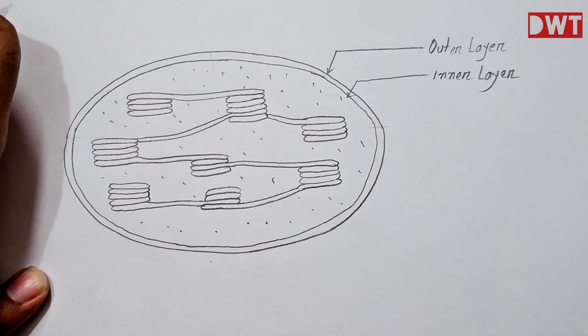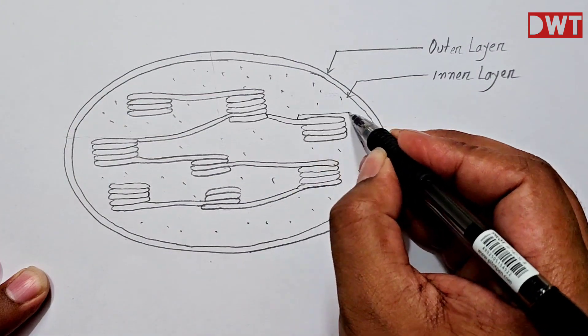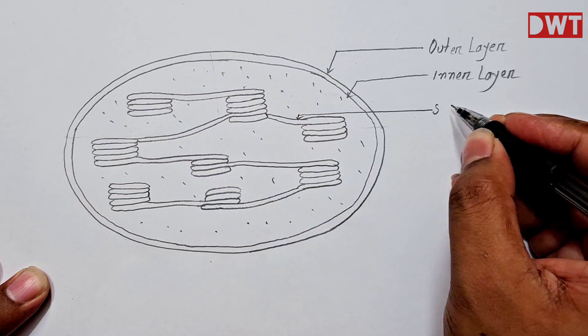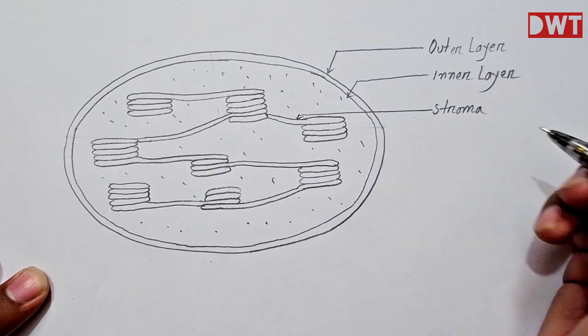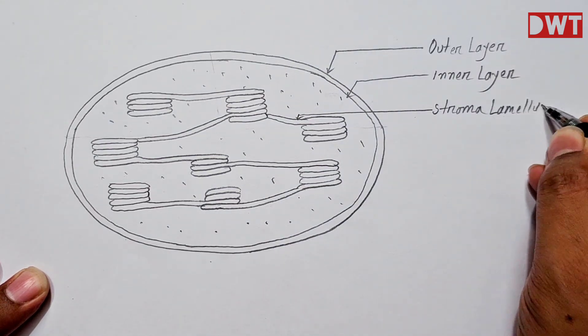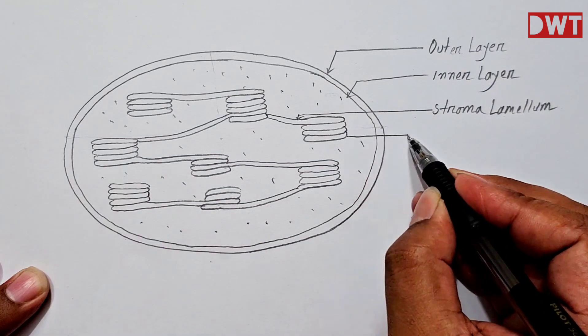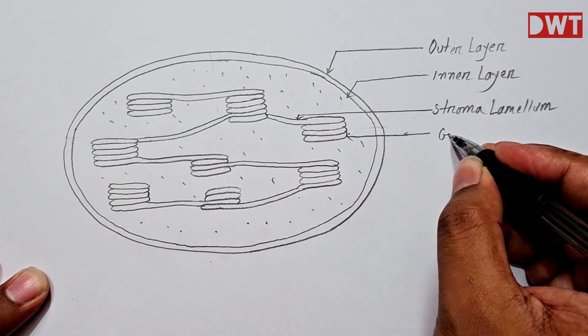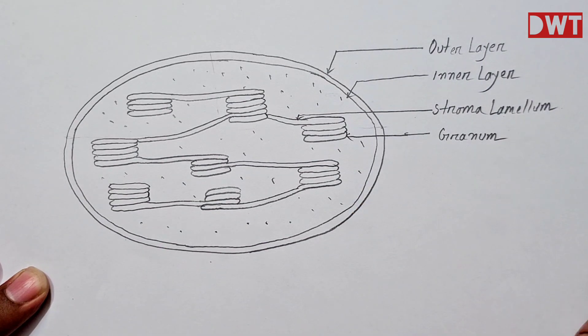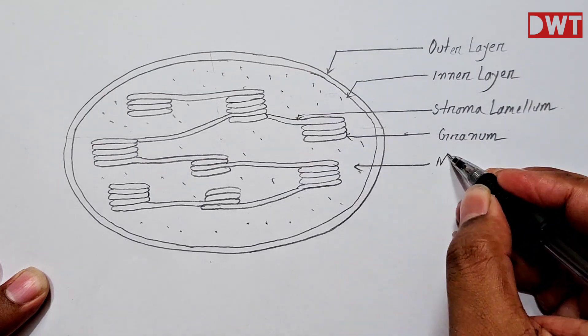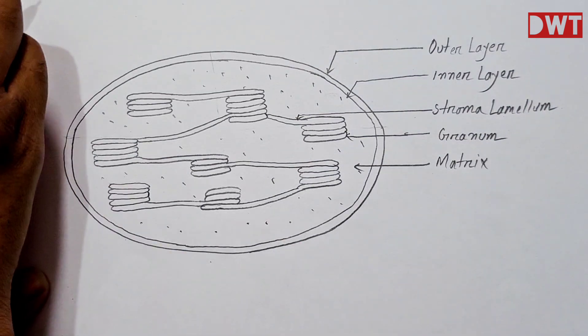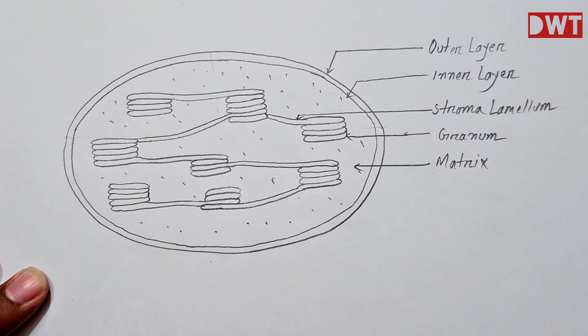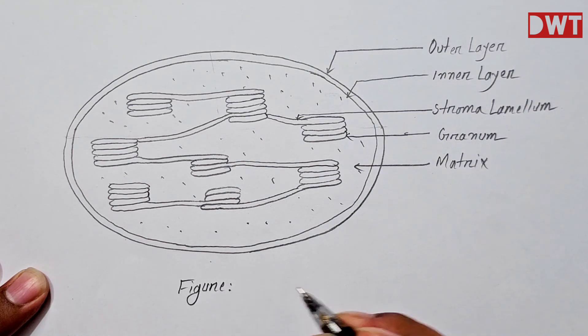Third one is stroma lamelli. Fifth and the last one is matrix. So last of all we have to give the name of the figure, it's called different parts of chloroplast.